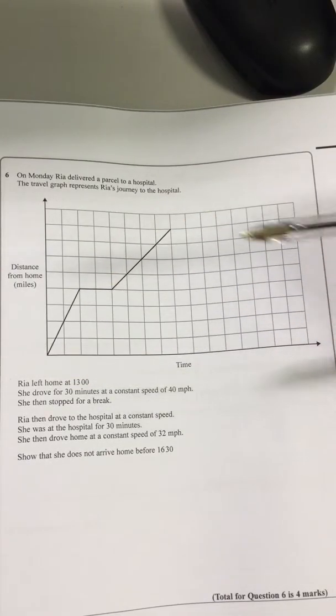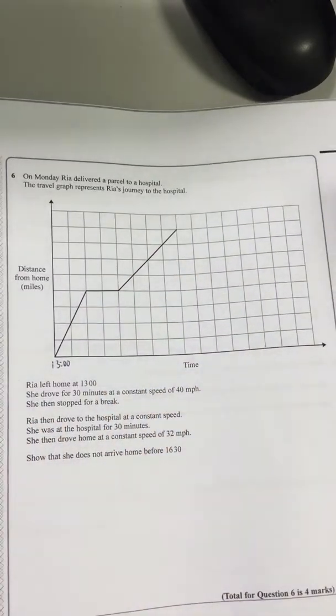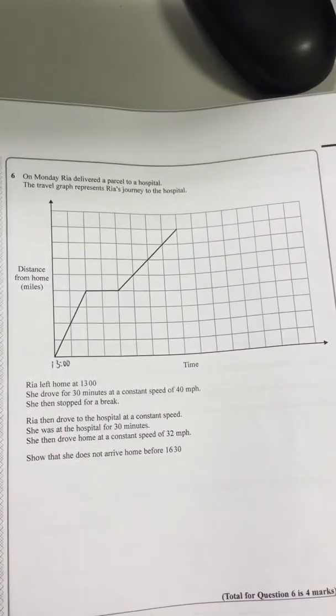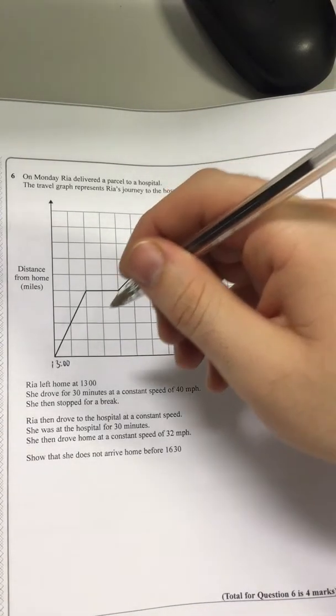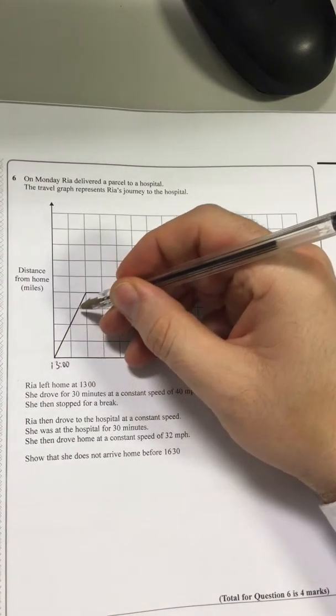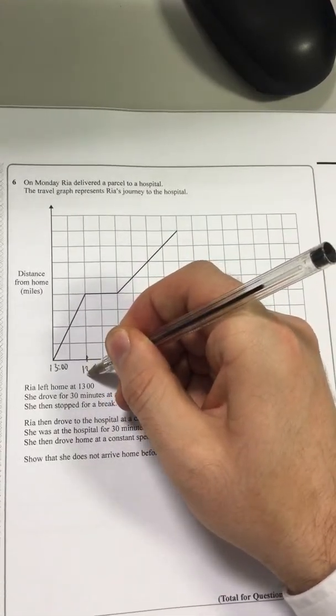Ria left their home at 1300, so I know that's there. That's not happened before with no units on there. That's interesting. She drove for 30 minutes at a constant speed of 40 miles per hour. So this is the constant speed that she's driving at, and that's to there, and that's half an hour. So I know this scale now.